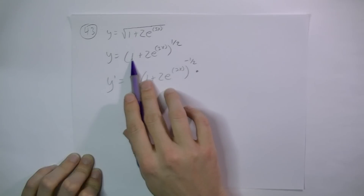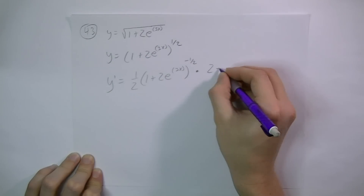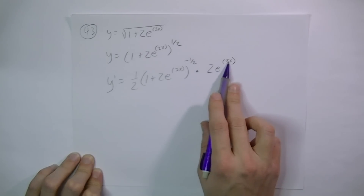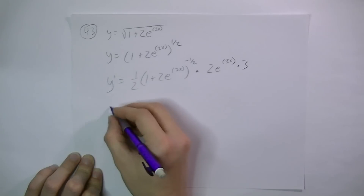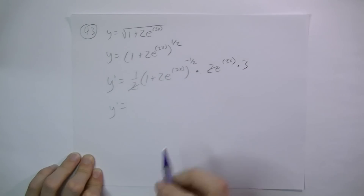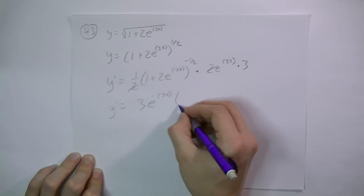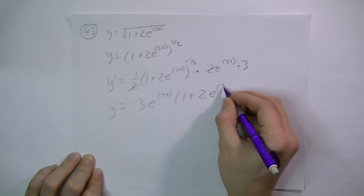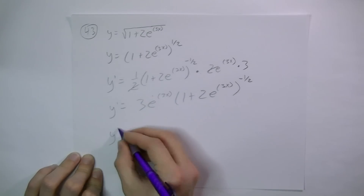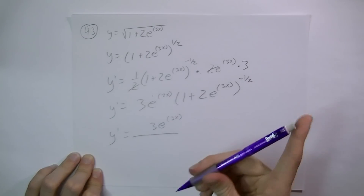The derivative of 1 will be 0. The derivative of 2e to the 3x — this part stays the same, and I have to multiply by the derivative of the exponent, so the derivative of 3x is 3. The half and this 2 cancel, and I get 3e to the 3x times quantity 1 plus 2e to the 3x to the negative 1 half. Since this is to the negative 1 half power, it comes into the denominator and we can change it back to a square root.